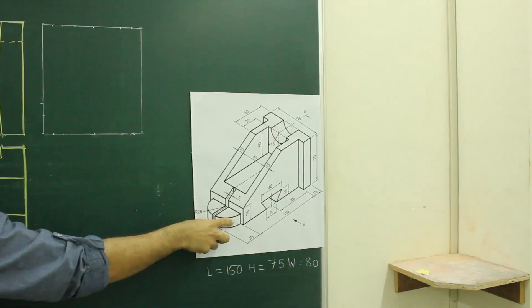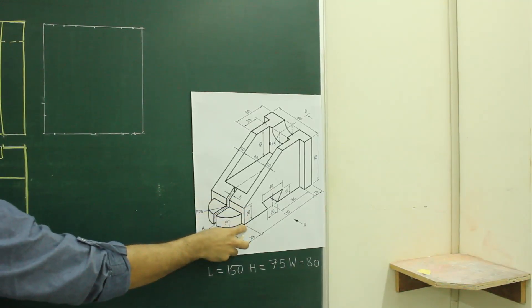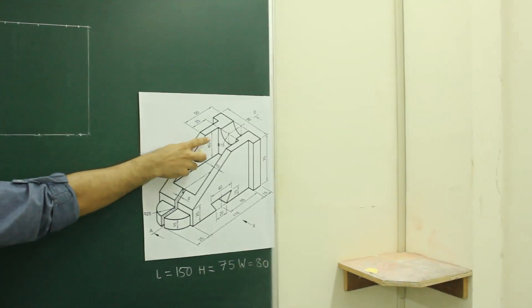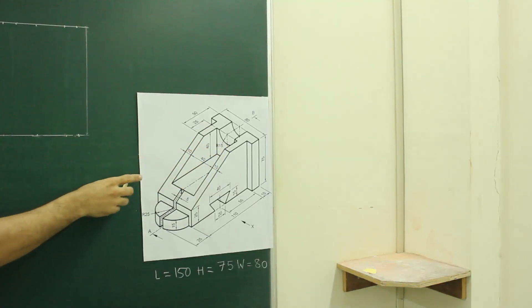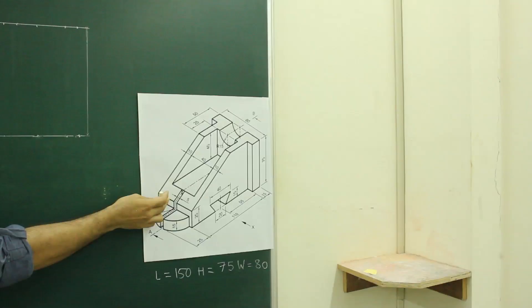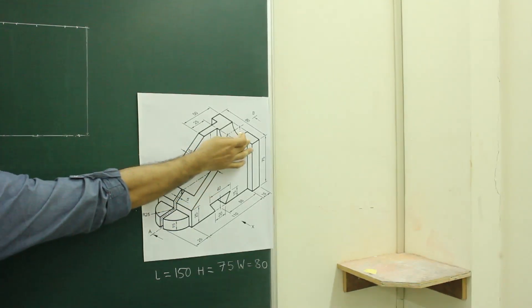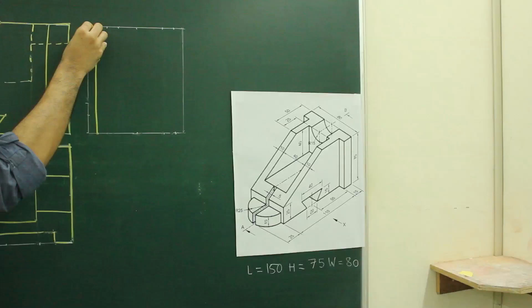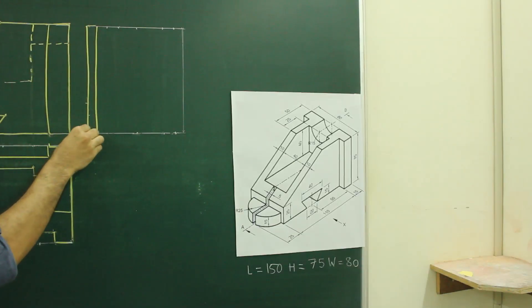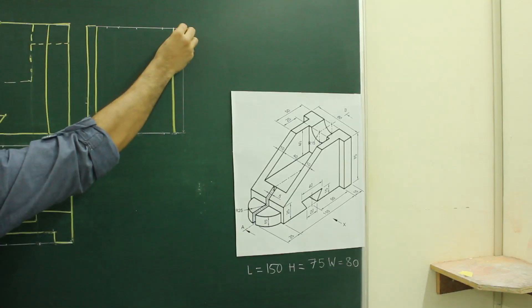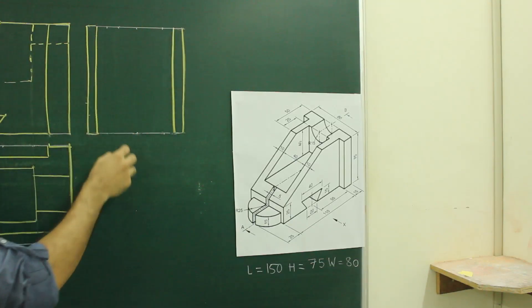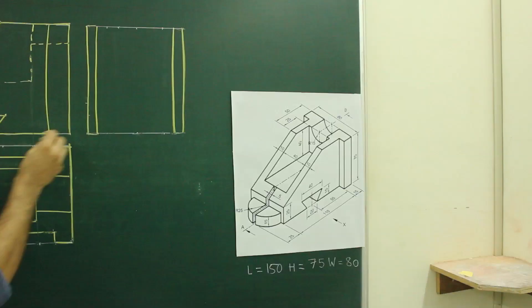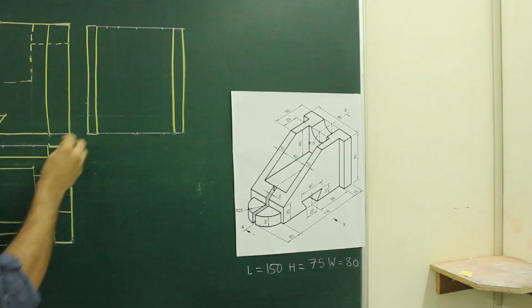When you see the main diagram from the side, you will see this circular portion, then you will see this rectangle, then this slope, and then this circular part. So we will draw step by step: circle, rectangle. Also when you see from the side you will see these two rectangles which are going through and through, so we will draw those as well. You can project from 45 degrees, then we will draw the circle.